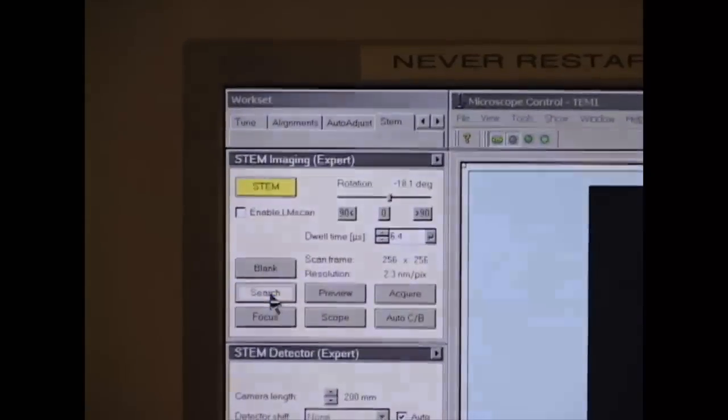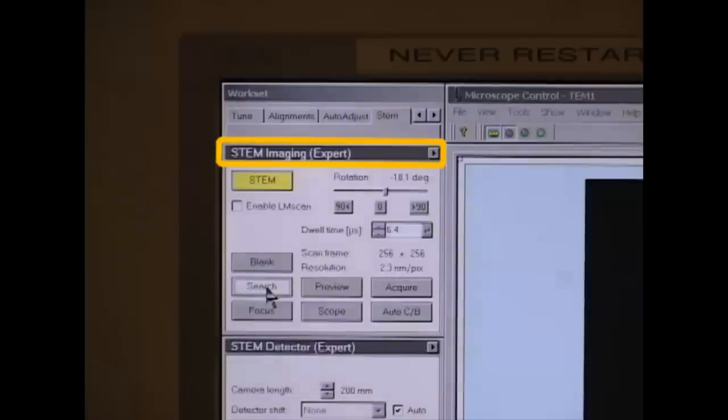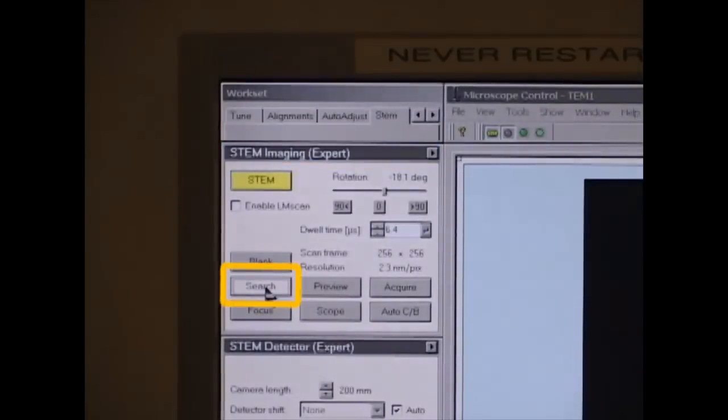In the Microscope Control, click STEM, STEM Imaging, and Search. Locate an area that has the feature you want to analyze.